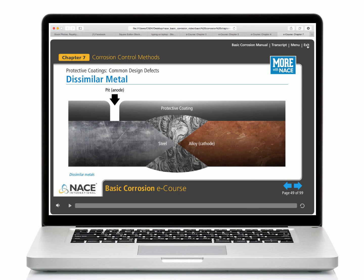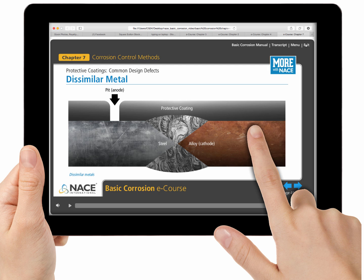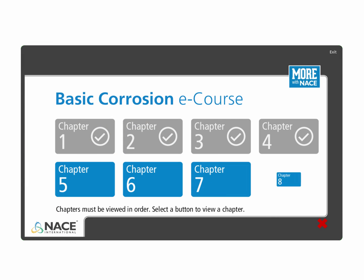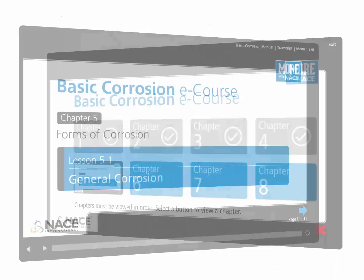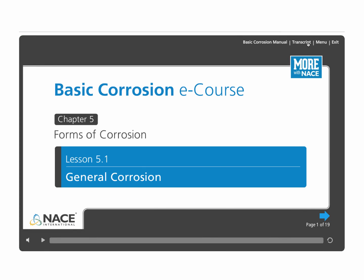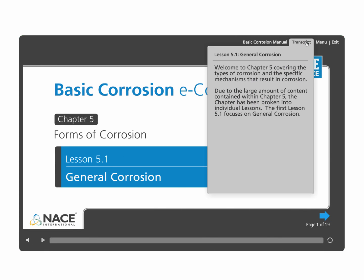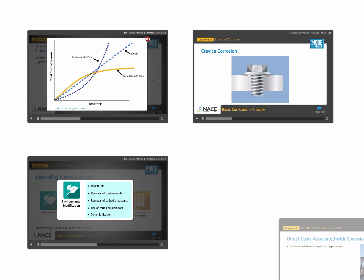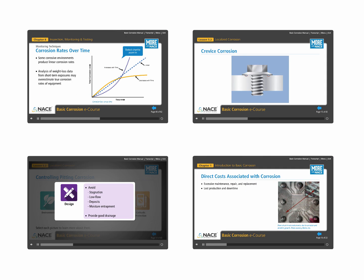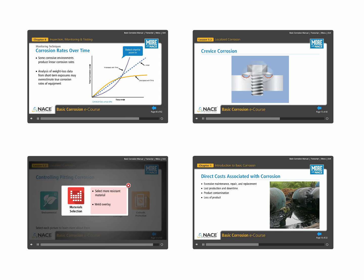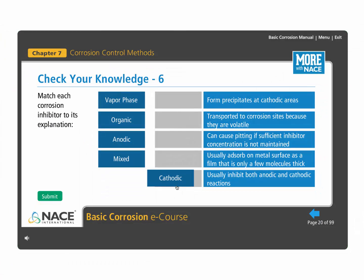All you need is a computer or tablet with internet access. The Basic Corrosion eCourse has eight separate in-depth multimedia chapters and includes a downloadable course manual, audio narration with transcripts, as well as colorful charts, animations, interactions and photos that will not only help you better understand corrosion but enable you to recognize it and its potential causes when you see it.